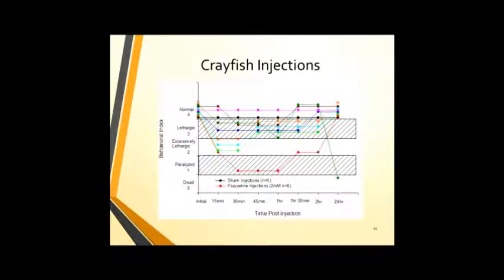Here's a graph depicting what I was just talking about. On the left-hand side, you can see the behavioral index ranging from 0 to 4, and at the bottom is the time post-injection ranging from initial, which would be zero, 15 minutes, 30 minutes, 45, one hour, one hour and 30, two hours, and then 24-hour time periods, at which point we measured the activity of each crayfish. Each individual line represents a different crayfish, with the exception of the black line at the top. Technically, it is five crayfish at the top, but they're all overlapping because they're normal. Those constitute the sham injections that we did, which was just saline. The other injections were at two millimolar concentrations. As an example, if you follow this red line, it started off normal after 15 minutes, it was excessively lethargic. Then it got paralyzed for about 40 or 30 minutes. Then it went back to lethargic, and then it was normal after 24 hours.